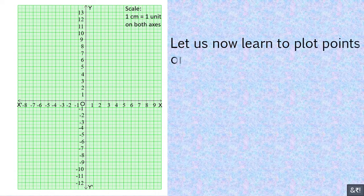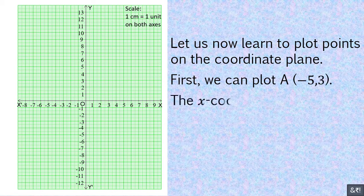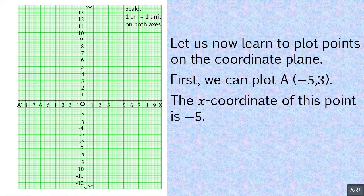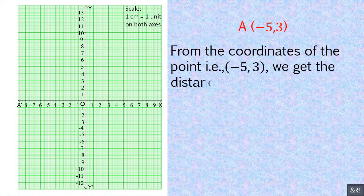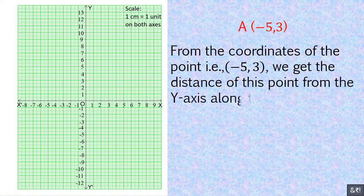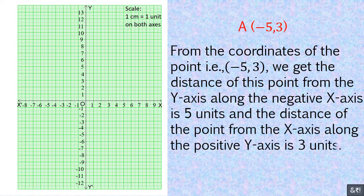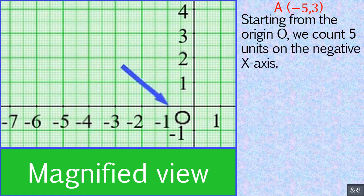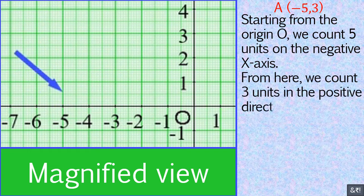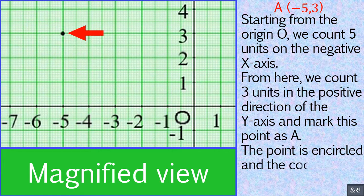Let us now learn to plot points on the coordinate plane. We will plot the point (−5, 3). The x-coordinate is −5 and the y-coordinate is 3. From these coordinates, the point is 5 units from the y-axis along the negative x-axis, and 3 units from the x-axis along the positive y-axis. Starting from origin O, we count 5 units on the negative x-axis, then count 3 units in the positive direction of the y-axis and mark the point as E. The point is encircled and the coordinates are written near it.